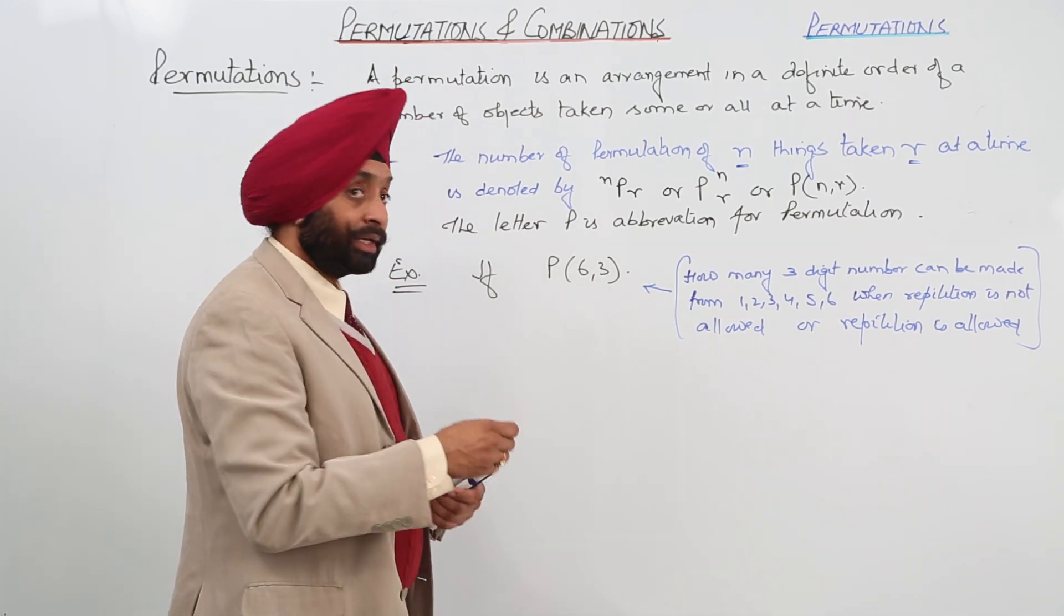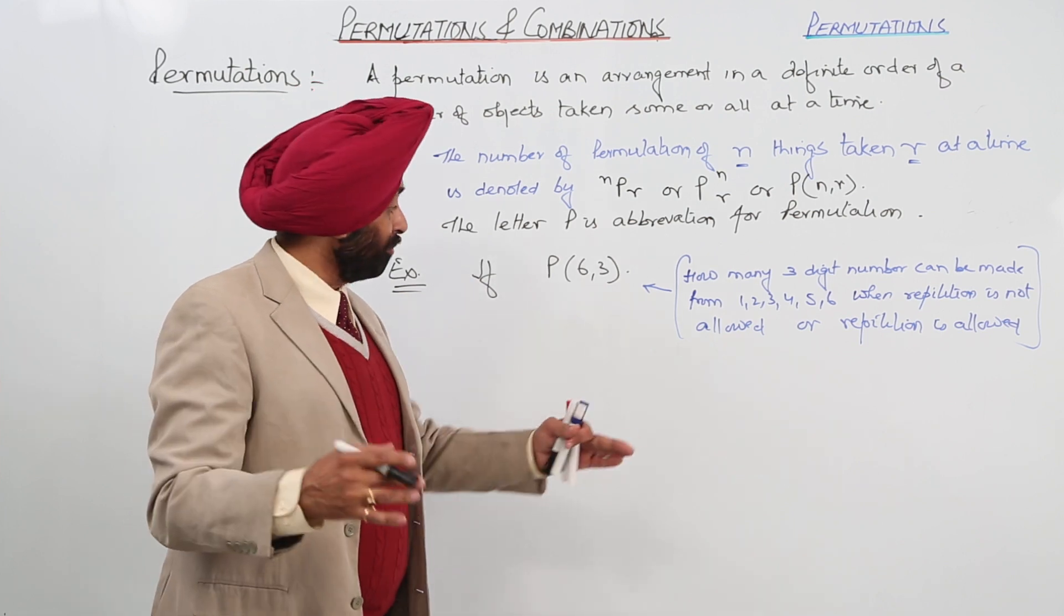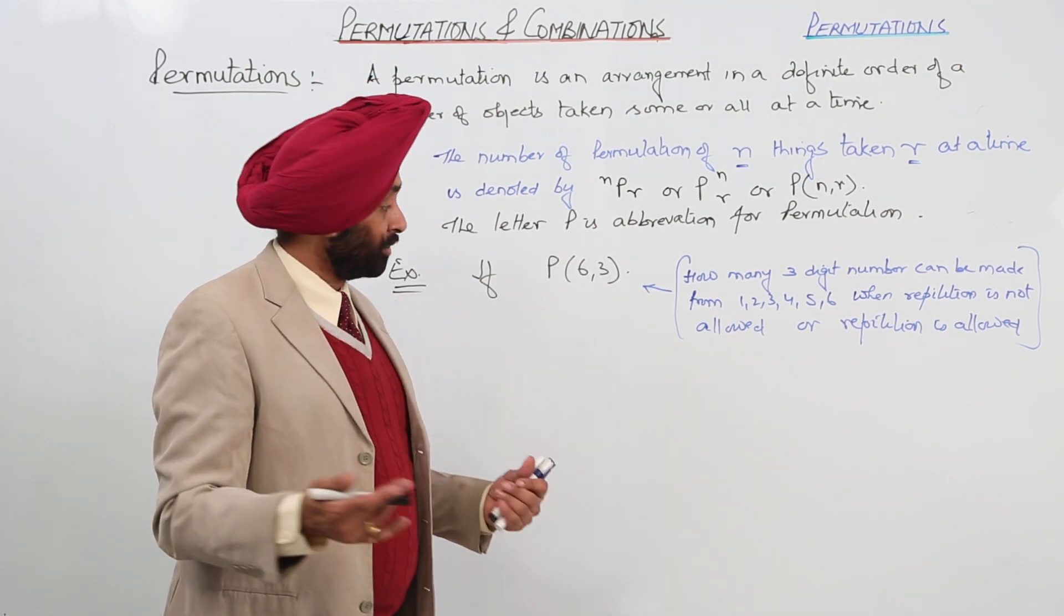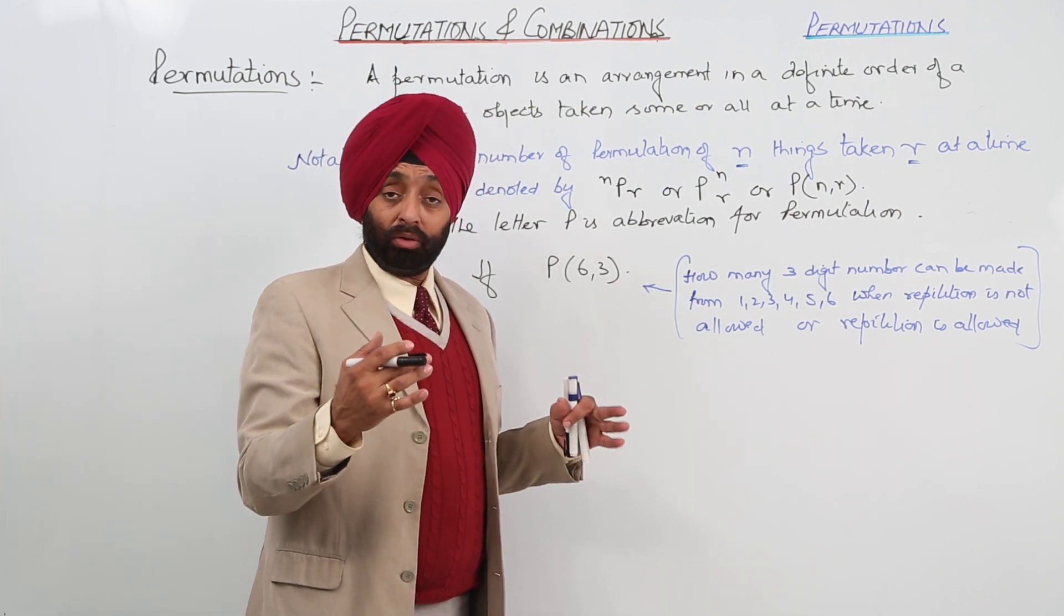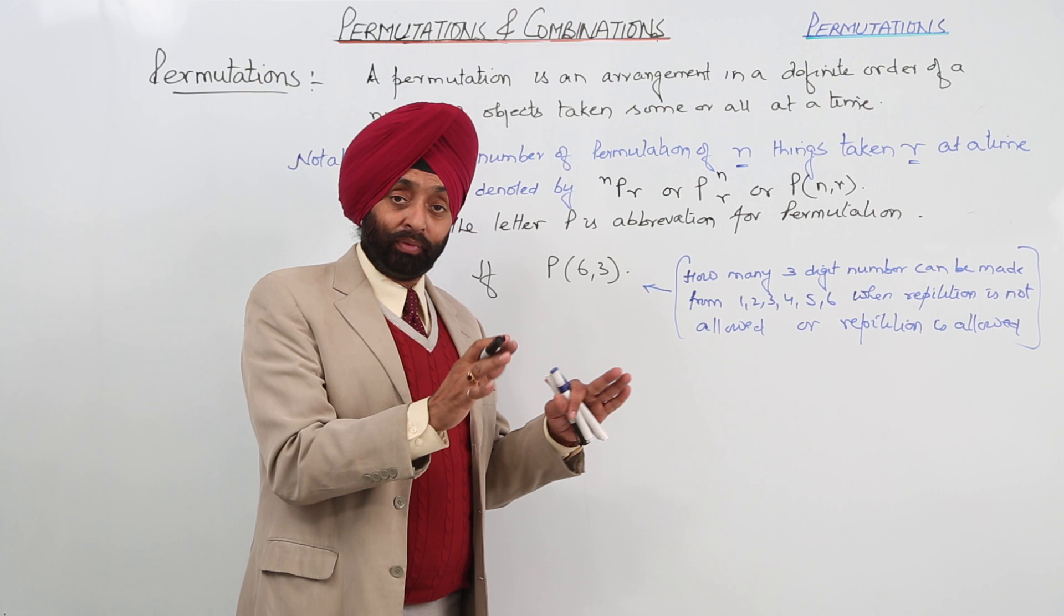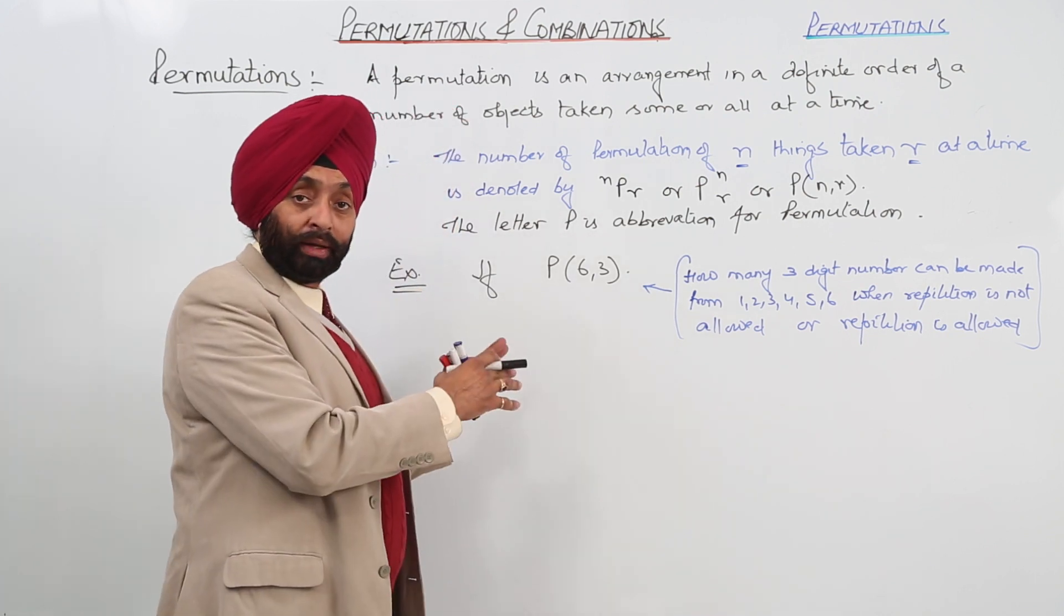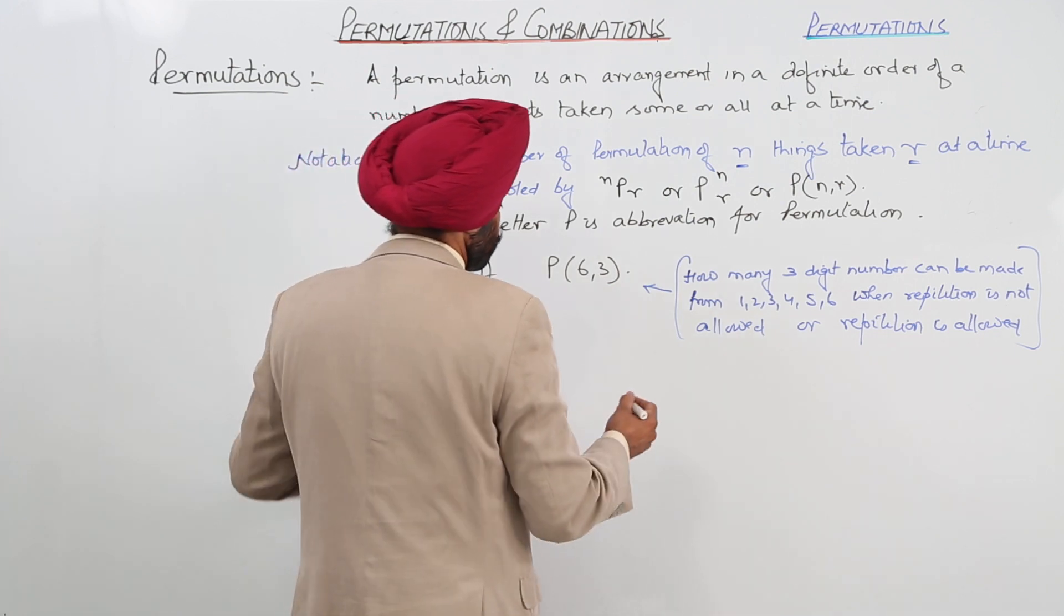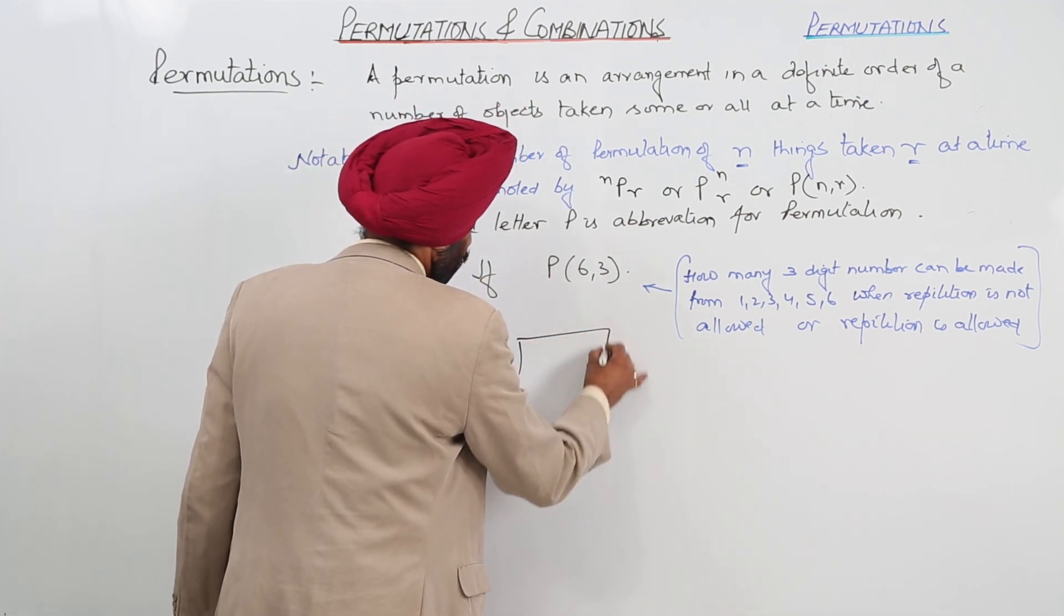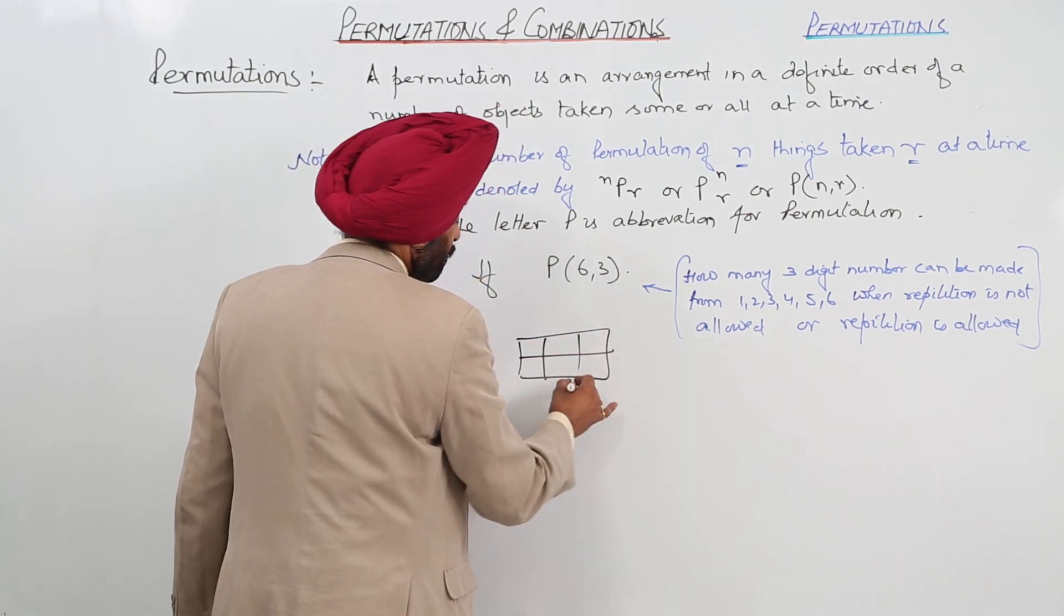Now, 3 at a time means what? 3 at a time makes 3 digit number, one and the same thing. So instead of fundamental principle for counting and using this one, what is the difference, which is the easiest one? So now we are having 3 digits.